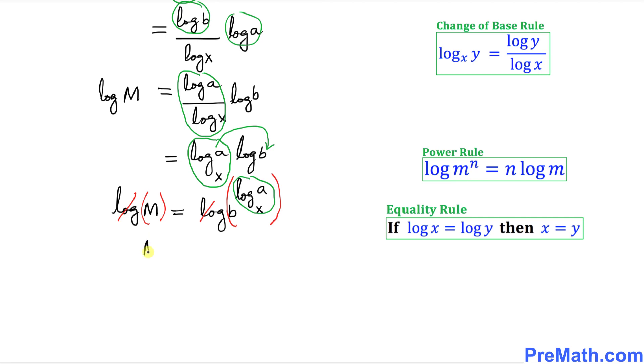So I simply got M equals to b to the power of log base x of a. And that is same as the right hand side. So that means we got left hand side equals to right hand side. And that is our proof.